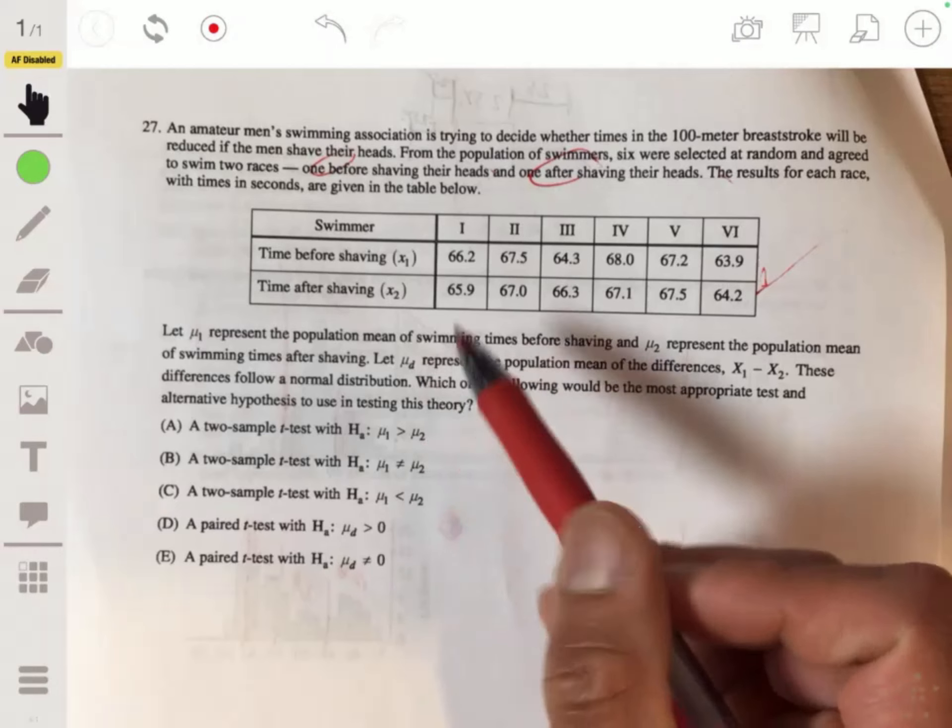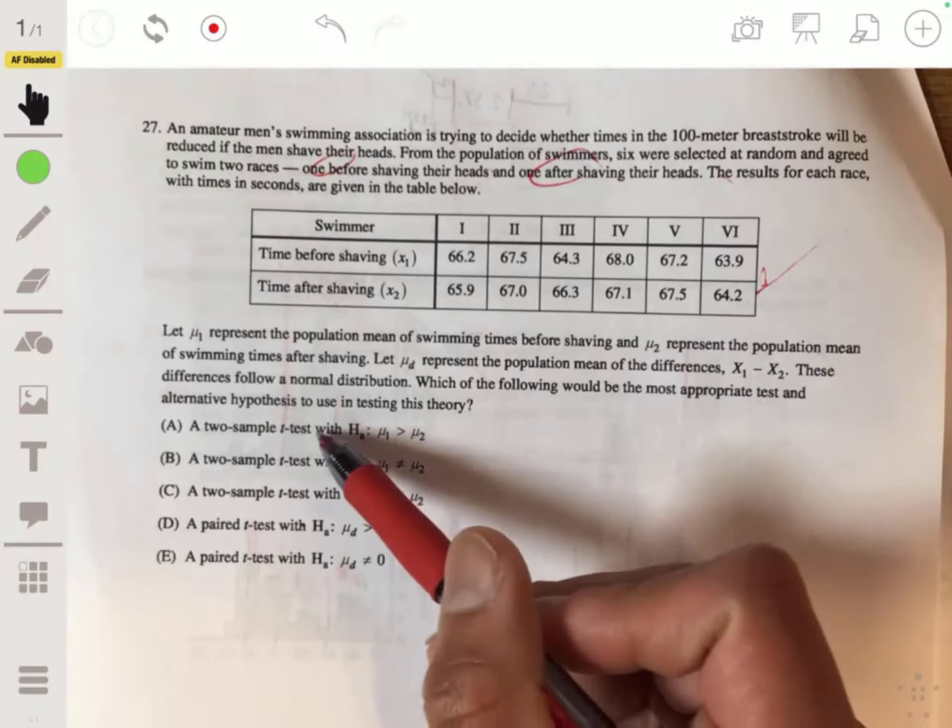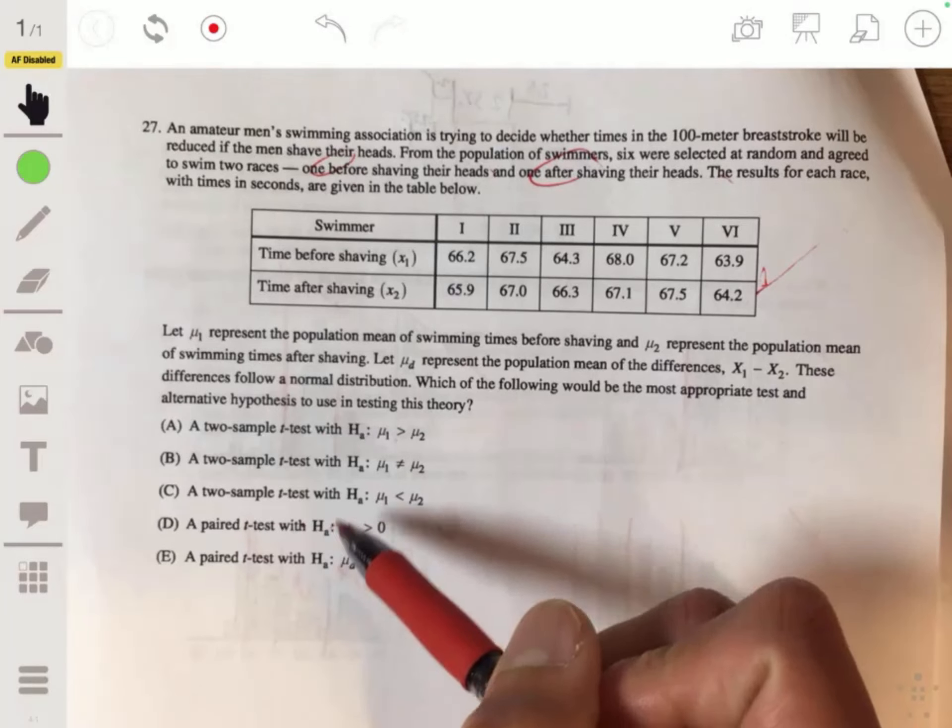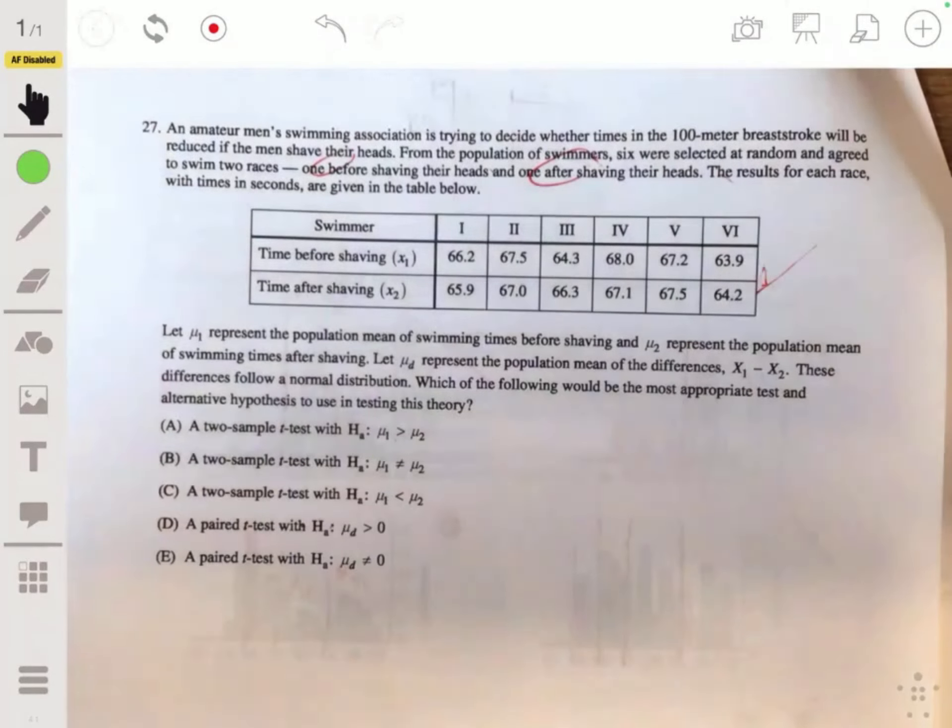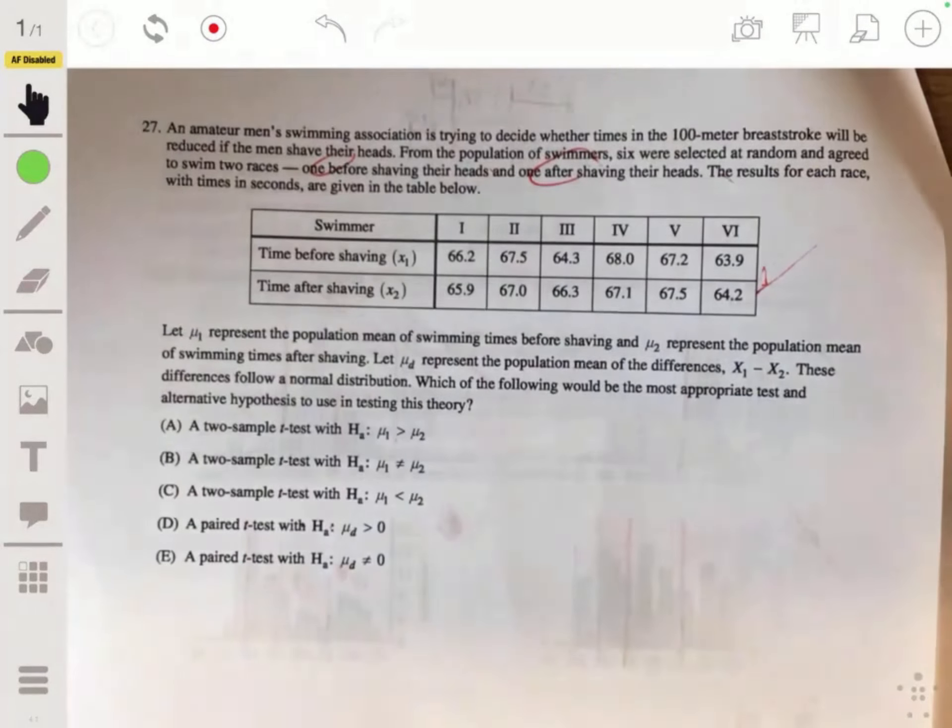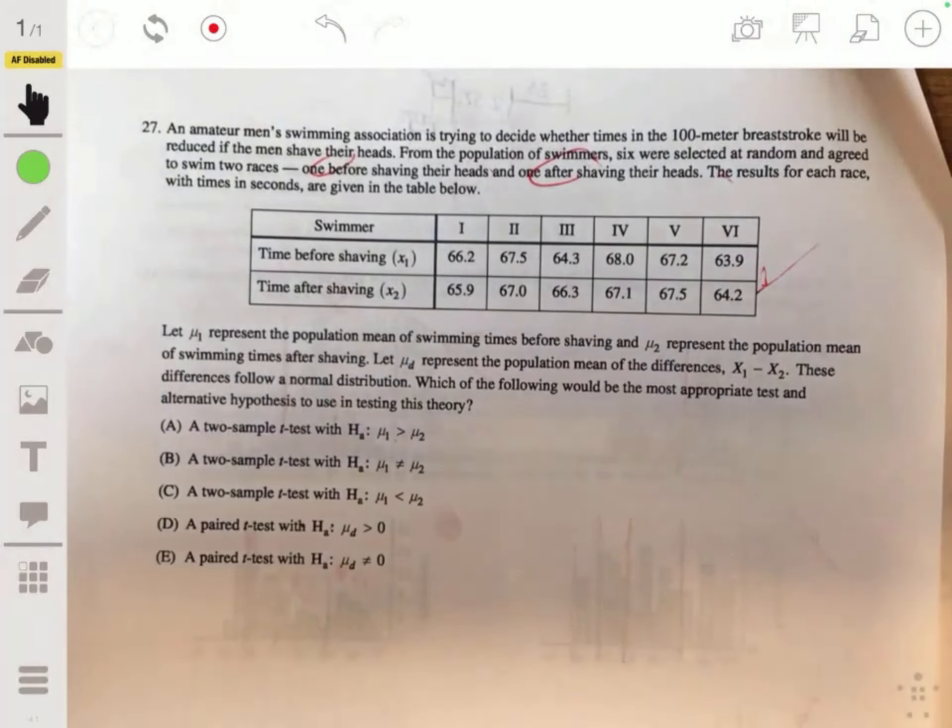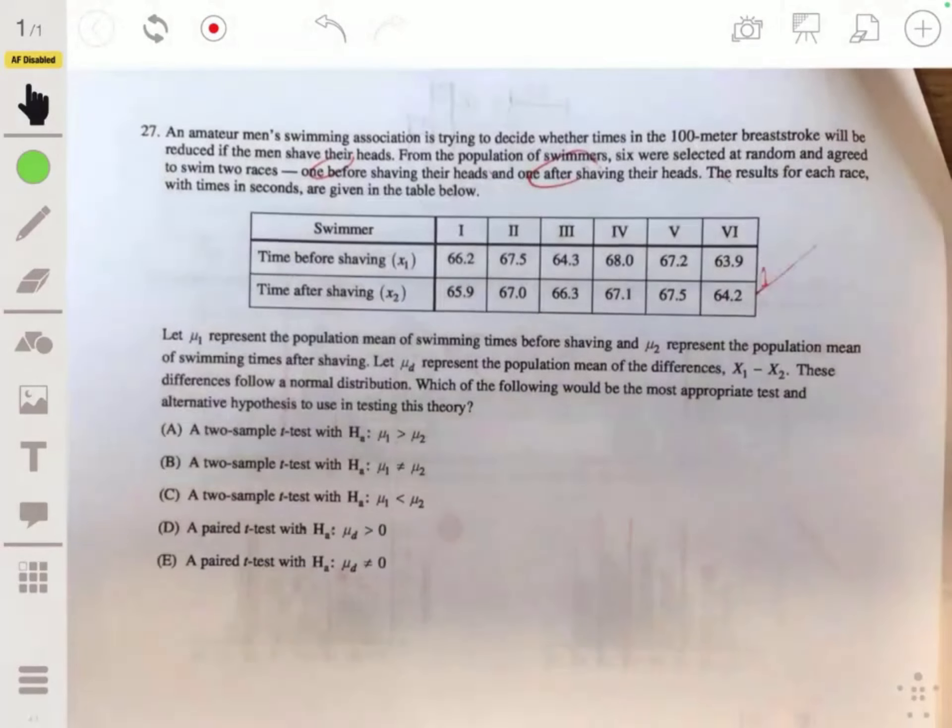So since the time with the shaved head is the second time, you want to basically say that the first time, or μ1, is greater than μ2. Now, what type of test do you use? Is it two sample or paired? That's the question. Well, it's going to be paired because each person, each swimmer, is going to be against their own time.